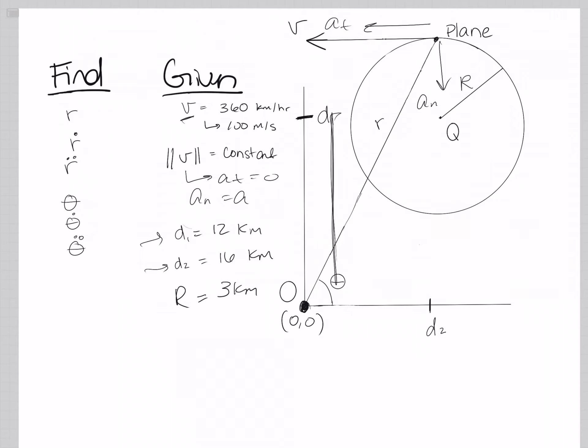They also give us the distance of d1 and d2, which is this and this, and that can be used to find r as well as theta. Then they also give this other r, which is the radius that the plane is flying in the circle. I denoted that as capital R instead of lowercase r, because oftentimes when you have multiple variables in the same problem, they can get confused. So be aware of that and pay attention not to get them confused.